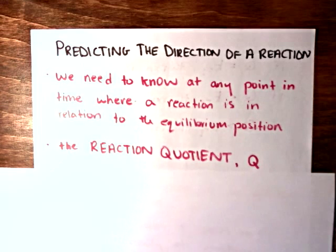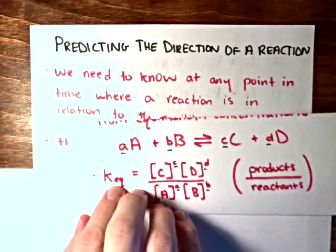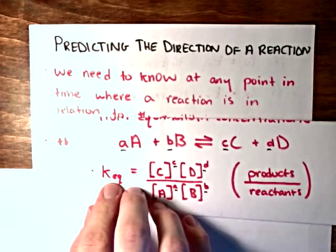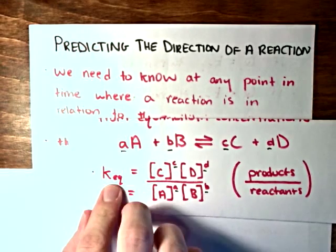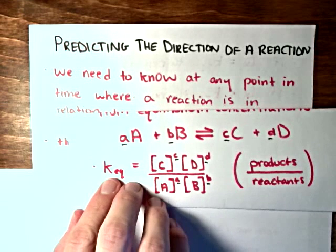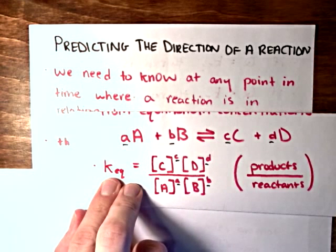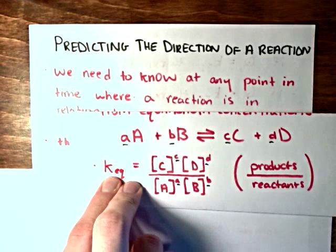And if you recall, we calculated our equilibrium constant like this. Concentrations of the products for a reaction raised to their respective coefficients divided by concentrations of the reactants raised to their respective coefficients.